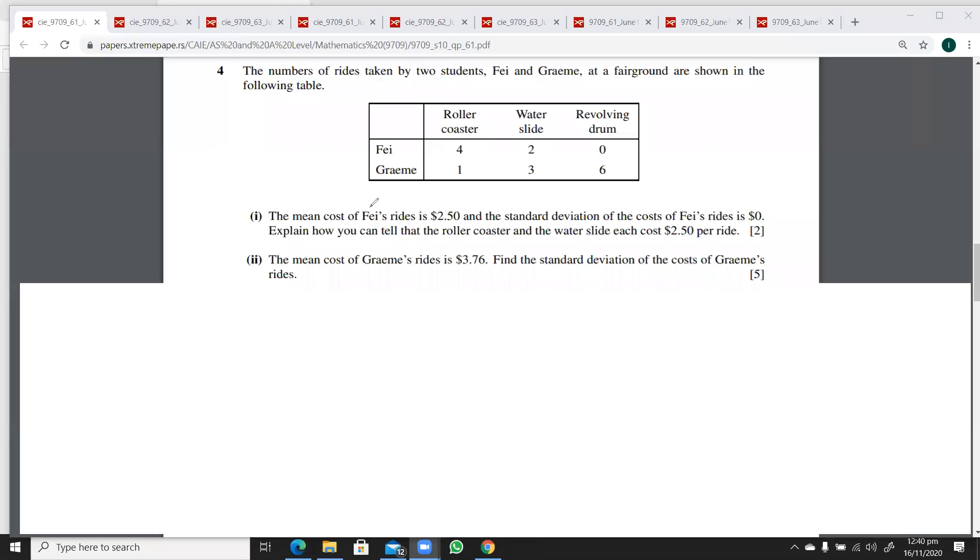Okay, fourth question from June 10 Paper 61. The mean cost of fair rides is $2.50 and the standard deviation is zero. Explain how you can tell that the roller coaster and the water slide each cost $2.50 per ride.